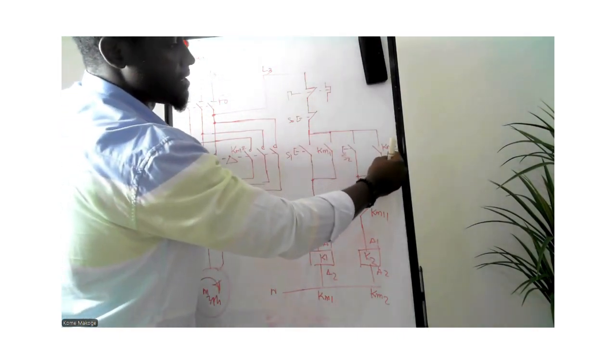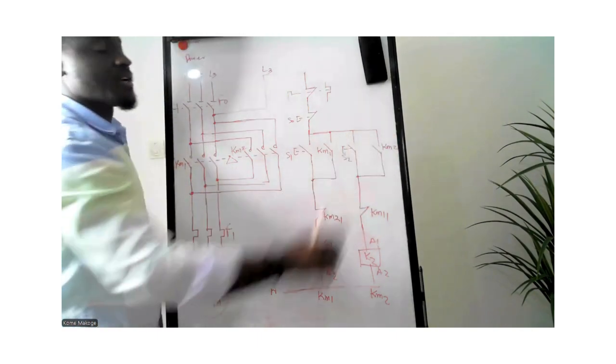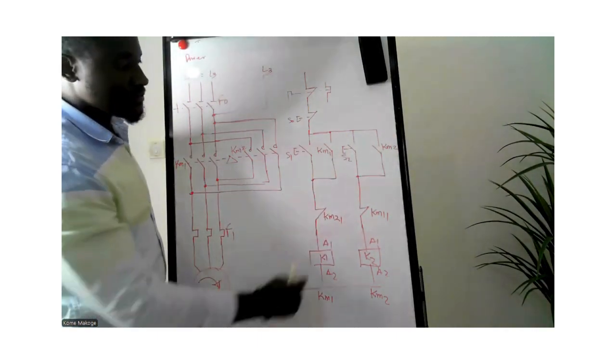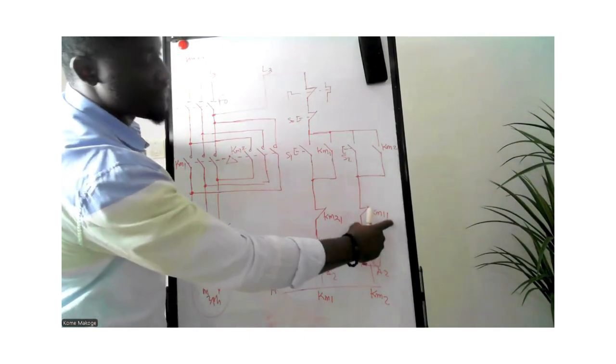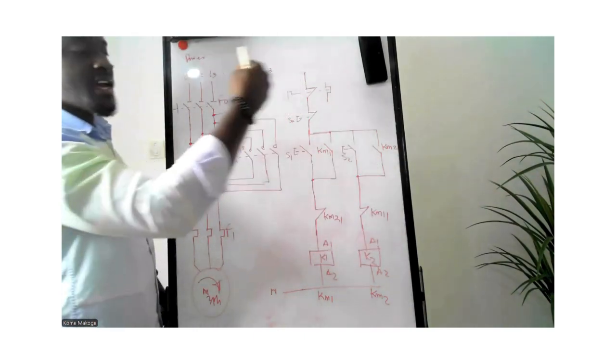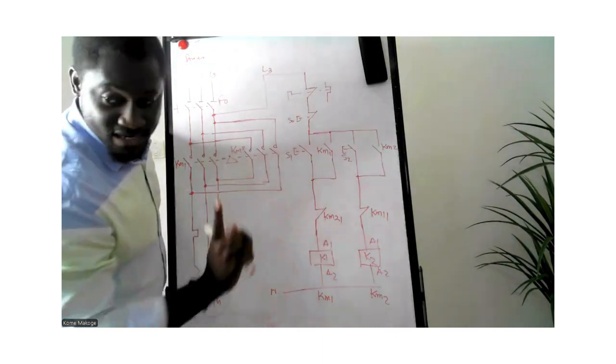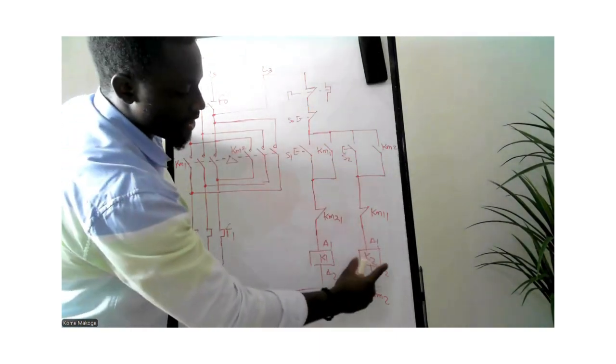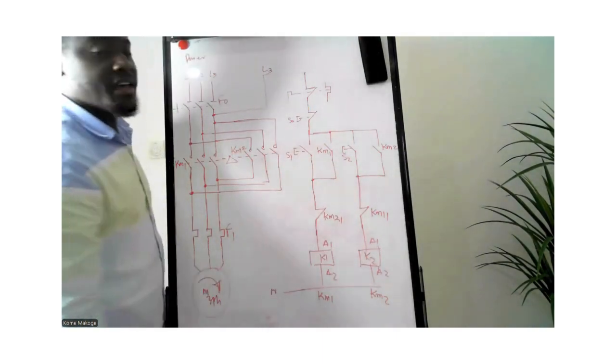The next on our right is KM2, an open contact on the contactor. Moving down straight, we have KM1 1, which is a close contact of the KM1. Then down as well, we have the coil of K1.